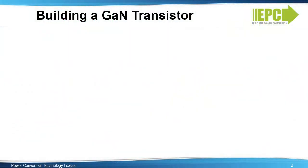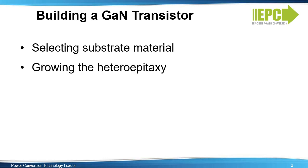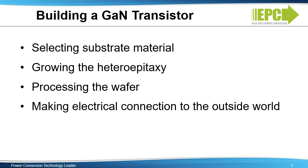Building a GAN transistor starts with the selection of a substrate material. Next is the growth of the heteroepitaxy. The wafer is then processed in a standard CMOS fab, and finally, electrical connections to the outside world are made.